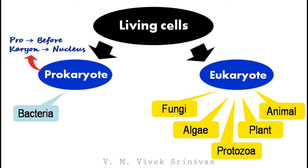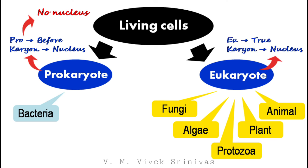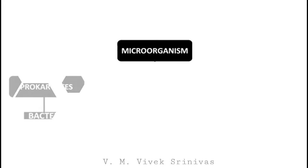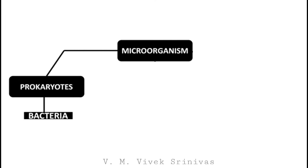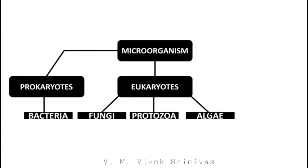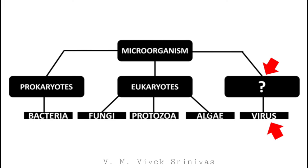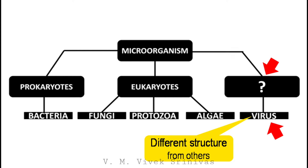In prokaryotes, the word 'pro' denotes 'before' and 'karyon' denotes 'nucleus,' meaning they lack a proper nucleus. In eukaryotes, 'eu' denotes 'true' and 'karyon' denotes 'nucleus,' meaning they have a proper nucleus. Bacteria are classified under prokaryotes; fungi, protozoa, and algae under eukaryotes. Viruses are neither prokaryotes nor eukaryotes because they do not carry any organelles or other specialized structures.